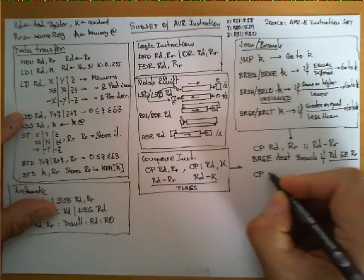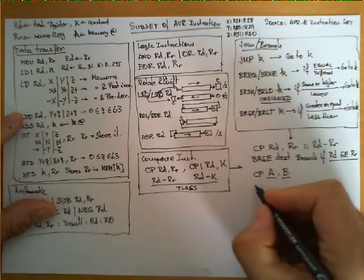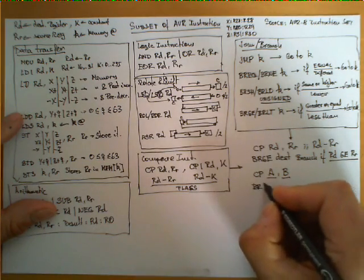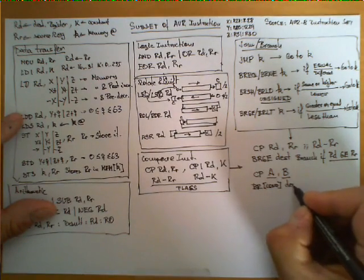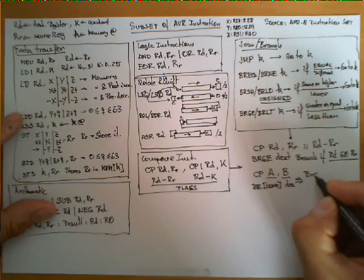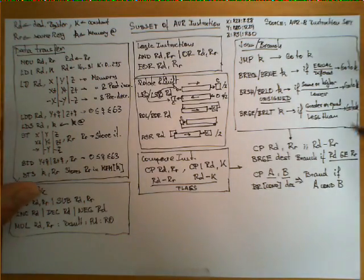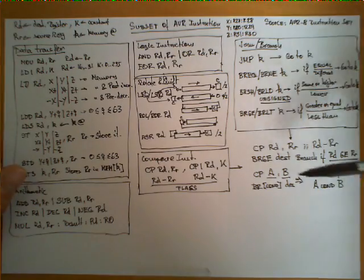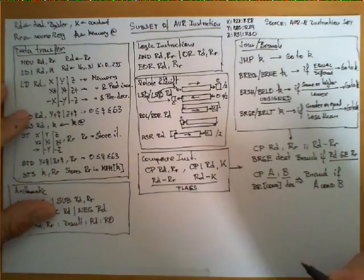In general, if we have CP A, B followed by BR with a certain condition and address k, we can state that we branch if A satisfies the condition with respect to B. In other words, this sequence of two instructions is equivalent to comparing whether A satisfies the specified condition relative to B.